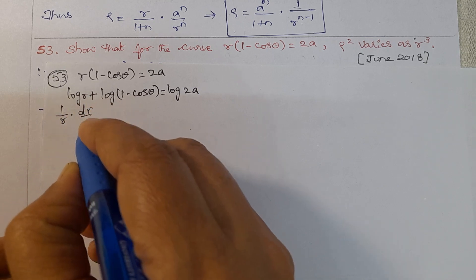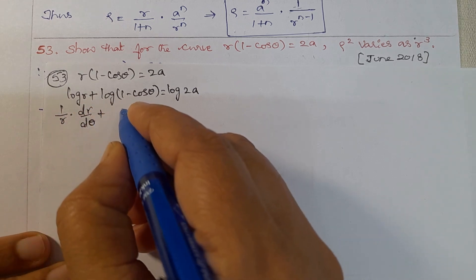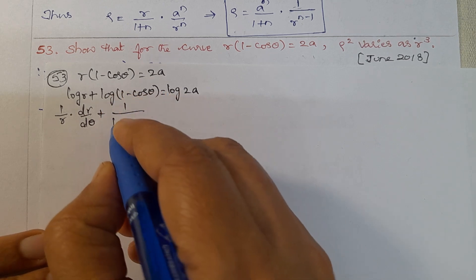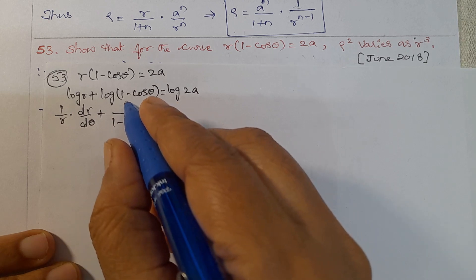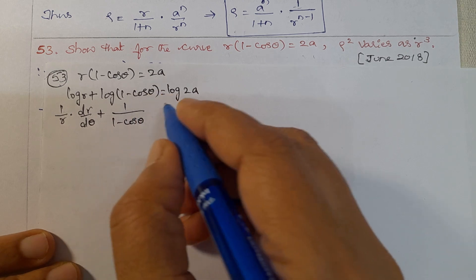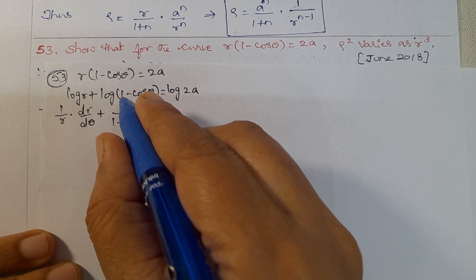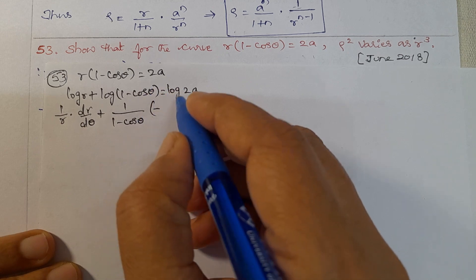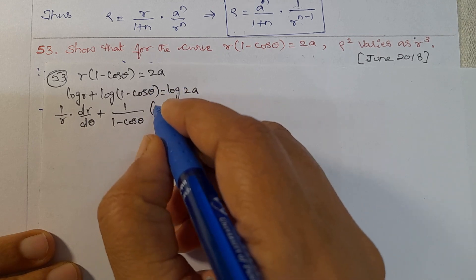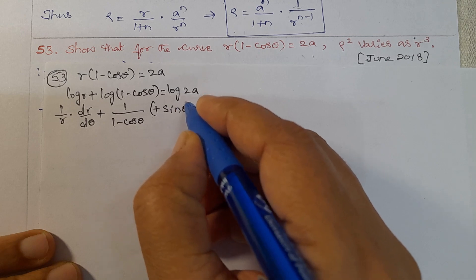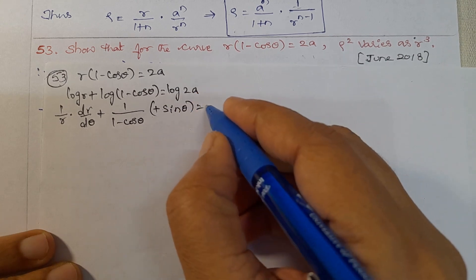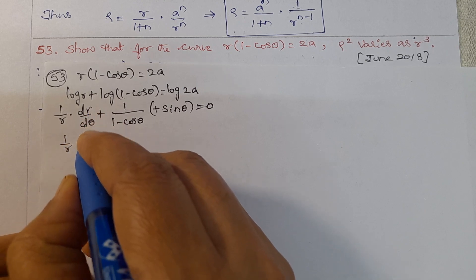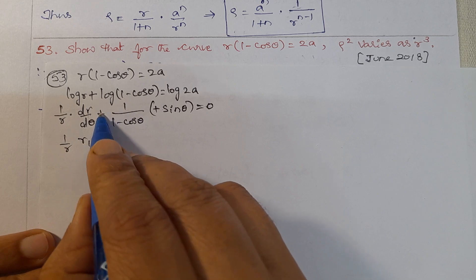(1/r)(dr/dθ) + differentiation of log(1 - cos θ) = 1/(1 - cos θ) multiplied by differentiation of (1 - cos θ) with respect to θ. Differentiating (1 - cos θ) gives +sin θ. The right side log 2a differentiates to 0.